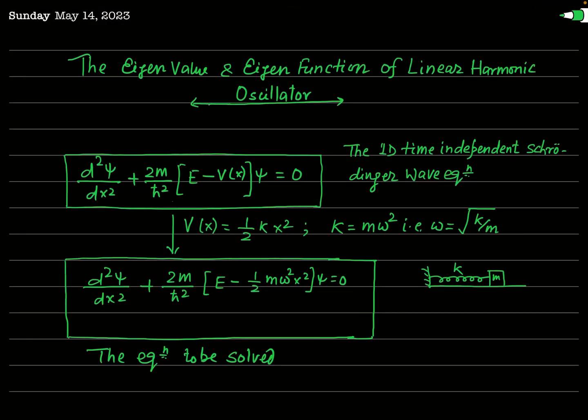The problem of the linear harmonic oscillator is a key problem of physics. This problem is dealt with in both classical mechanics and quantum mechanics. Here we will see the problem of the one-dimensional linear harmonic oscillator particularly in quantum mechanics. The basic problem is to find the eigenvalue and eigenfunction of this linear harmonic oscillator when we treat the problem in one-dimensional space. Our aim in this lecture is to find the eigenvalue and eigenfunction only in a few minutes.